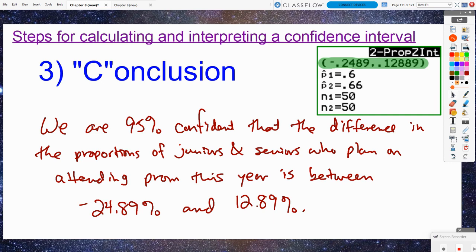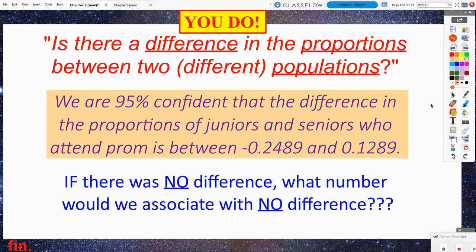So that leads us now into the you do problem. Is there a difference in the proportions between our two different populations? Remember we said we are 95% confident that the difference is going to be somewhere between negative 25 ish percent and positive 13 ish percent. The thing I want you to consider here, if there was no difference between the juniors and the seniors attending prom, if there was no difference in those two proportions, what number would we associate with no difference? And is that number in our confidence interval? Is it a plausible value that we might have captured with our confidence interval? We will discuss that the next day in class.